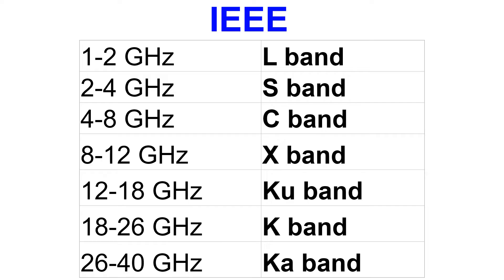LNA is used at the front end of satellite receivers to enhance weak signal reception, especially for satellites at higher altitudes like medium earth orbit (MEO). LNBs are used for receiving and down converting signals from geostationary satellites.